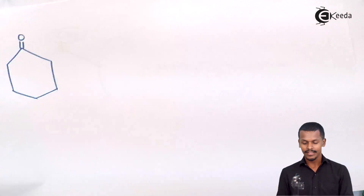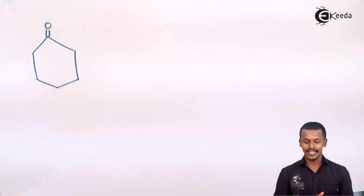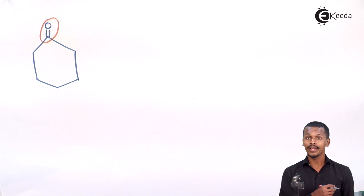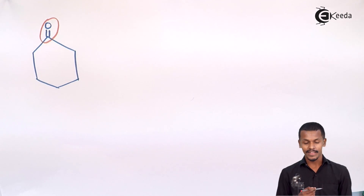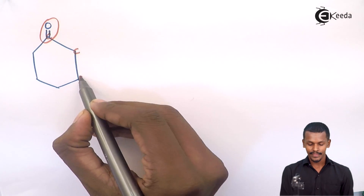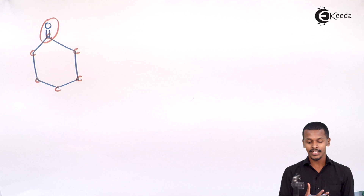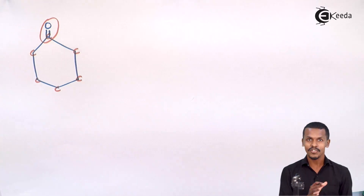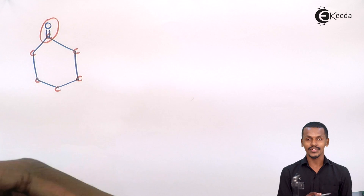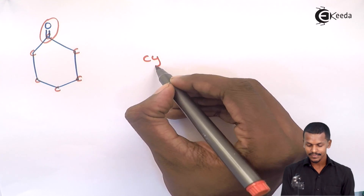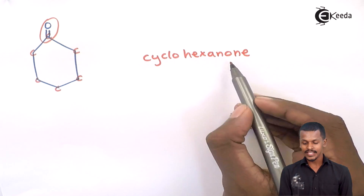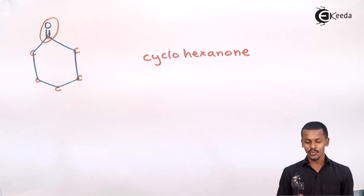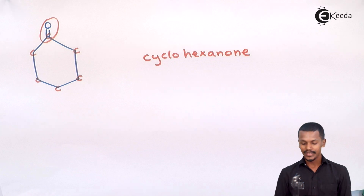Example 3: Again there are 6 carbon atoms in a ring — the parent name is cyclohexane. One functional group is attached on the first carbon atom: a ketone group (C=O). The suffix '-one' and the 'a' indicate the presence of a ketonic group. Therefore the name of this compound is cyclohexanone.